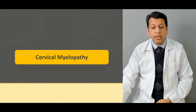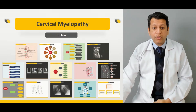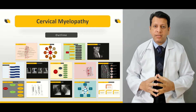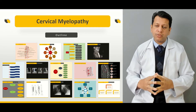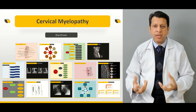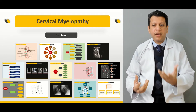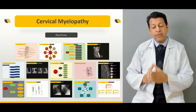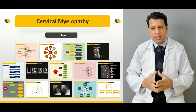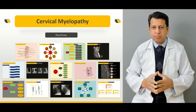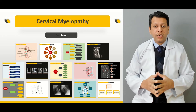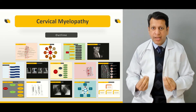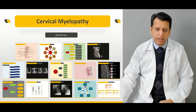Cervical myelopathy is one of the very common causes of neck pain and associated problems, which include patients fumbling objects as well as having an awkward gait. By definition, it is called degenerative spinal spondylosis associated with the fumbling of objects from the hand as well as the awkward gait.